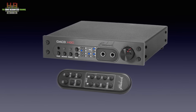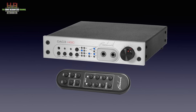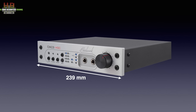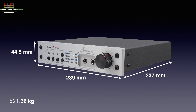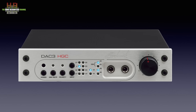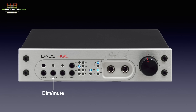The DAC-3 can be ordered in black or silver. It has an anodized aluminium front and a metal housing, measuring 239 by 237 by 44.1 mm and weighing 1.36 kg. 19-inch mounting accessories are available as an option. On the front we see the power LED, the power button, and an LED that indicates whether the dim or mute function is active. The dim/mute function dims the output by 20 dB when pressed once; when pressed twice the output is muted; and when held for 3 seconds the active input is switched to home theater bypass mode. When the dim/mute button is pressed in combination with the input-up knob, the output level will be fixed.